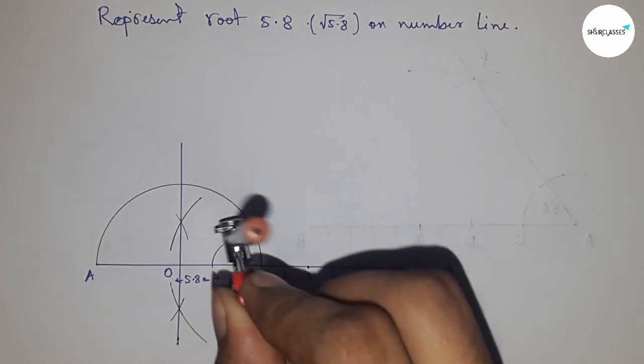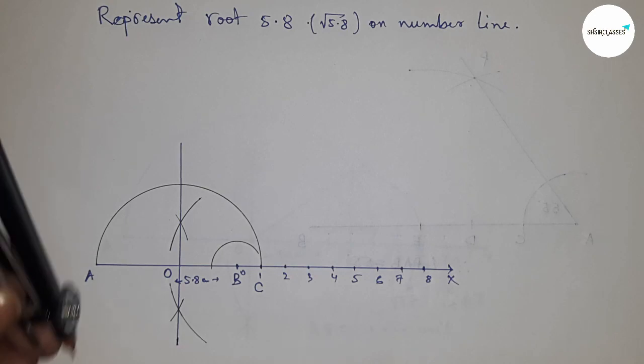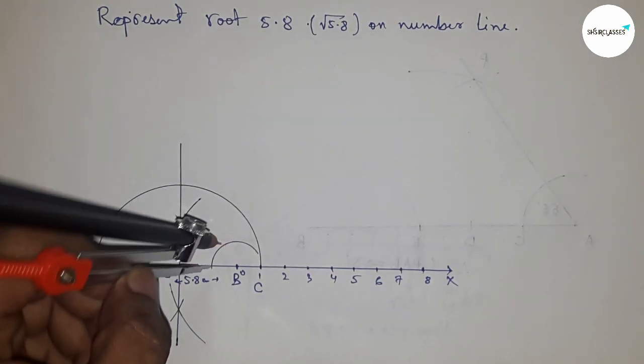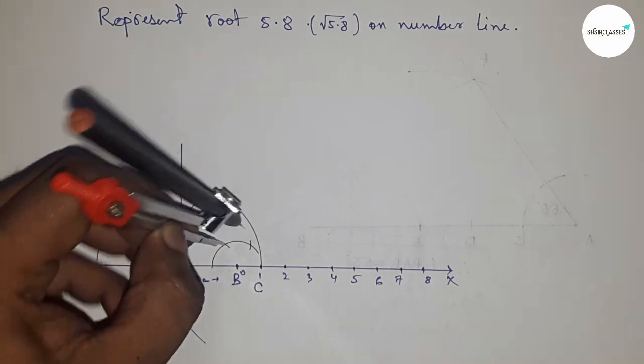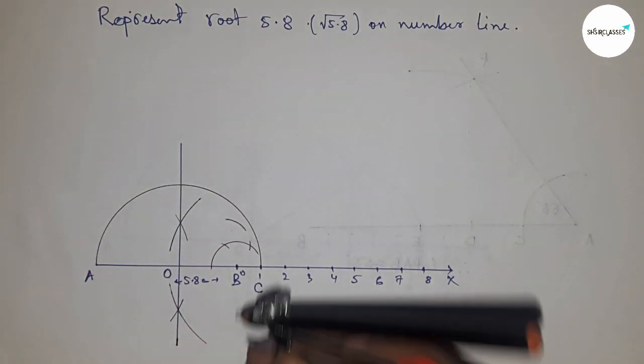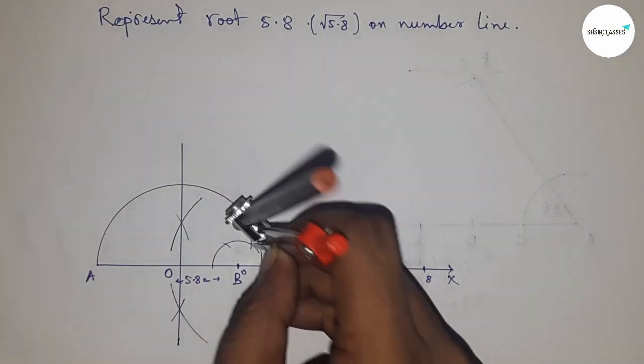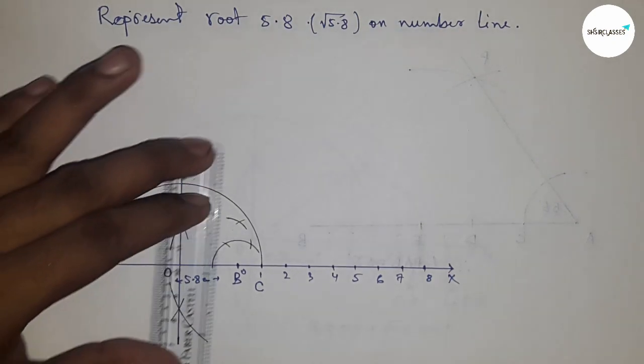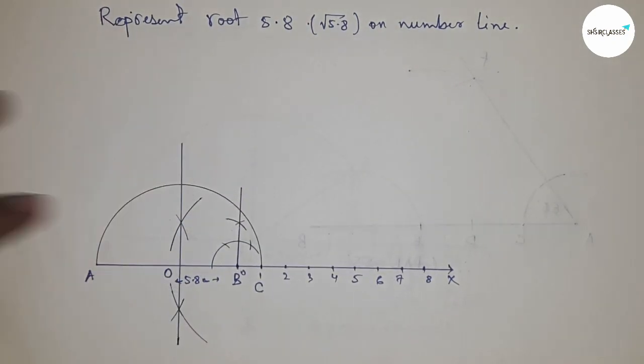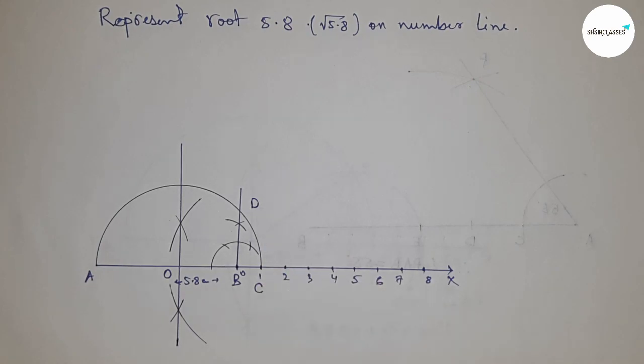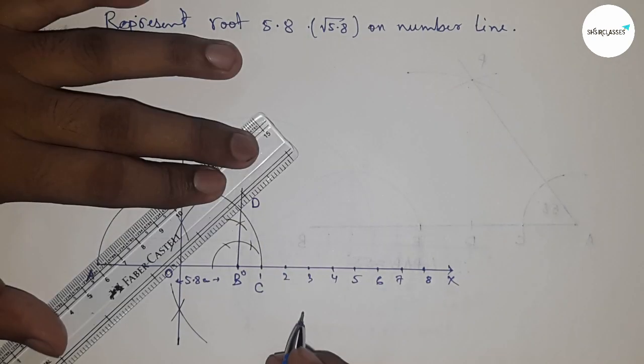Next, draw a 90-degree angle on point B. Take any length and draw an arc here. With the same length, put the compass here and cut the arcs. Join this, which meets the semicircle at point D.